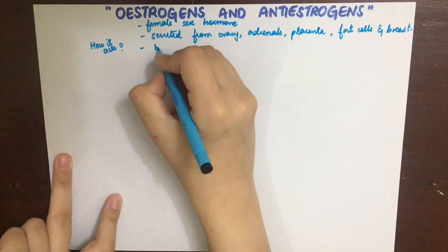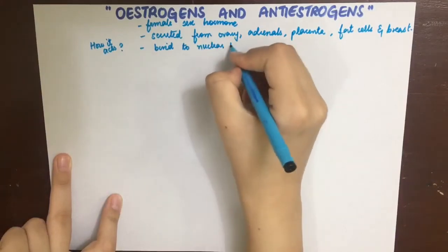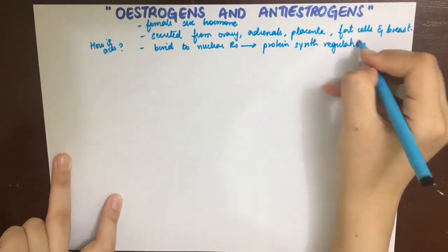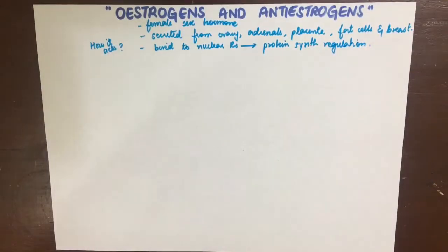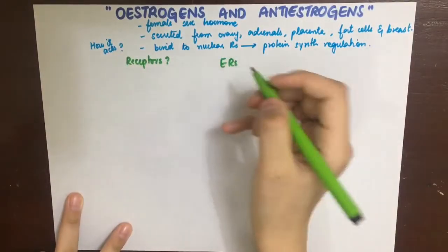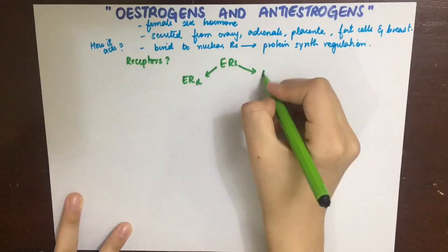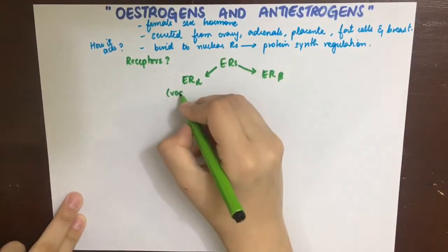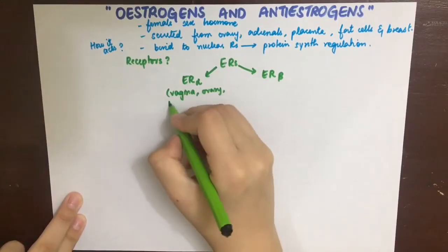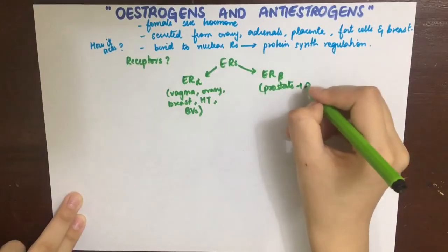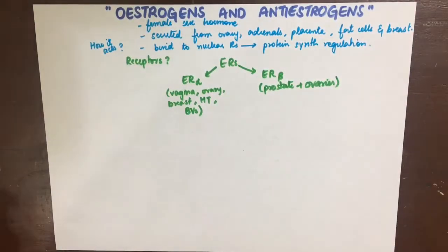Estrogen has two receptors: one is estrogen alpha receptor and the other is estrogen beta. Most tissues have both of these receptors, but ER alpha is mainly present in the vagina, ovary, breast, hypothalamus, and blood vessels, while ER beta is present in the prostate and ovaries.